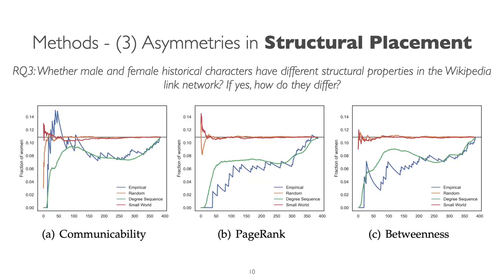Here are the results. We can see that for the case of random and small world, it converges to the expected ratio quite rapidly for all three centrality measures. While in the case of the empirical graph and the degree-sequence-preserving graph, it did not converge till the very end. We can also see that women consistently exhibit lower centrality in the top 50 to 100 nodes of the empirical graph than in the degree-sequence-preserving graph. This suggests that there are some factors beyond network structure heterogeneities that may contribute to their limited centrality in the link network.